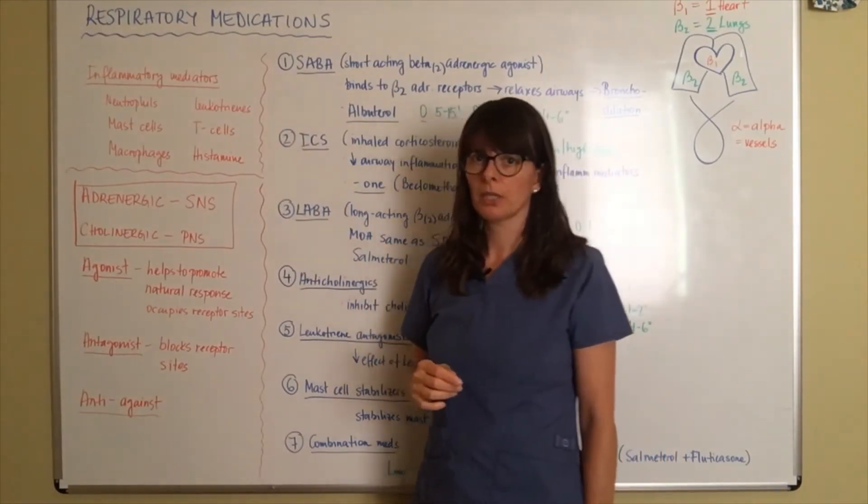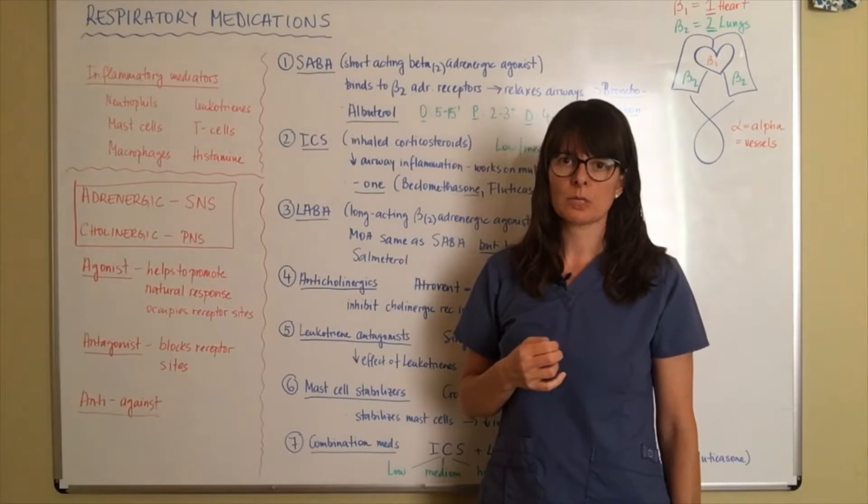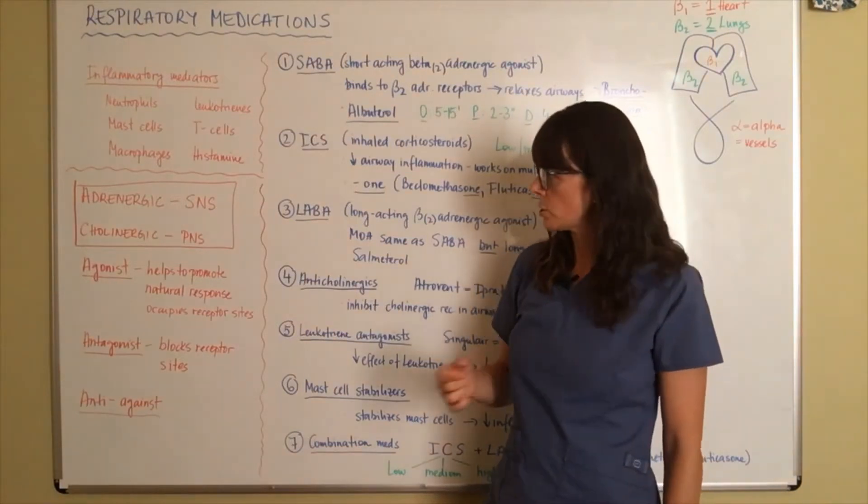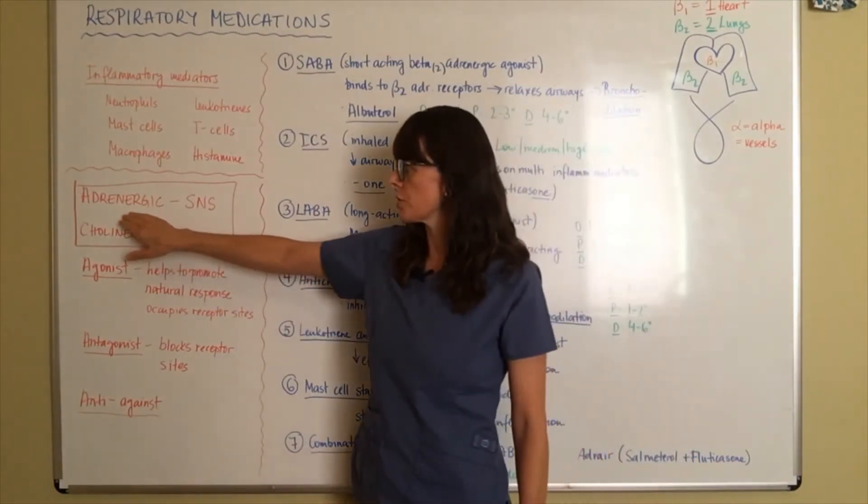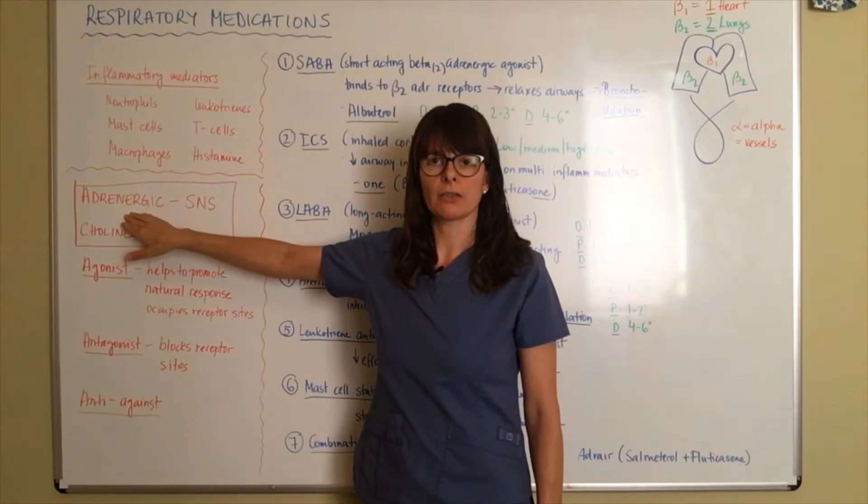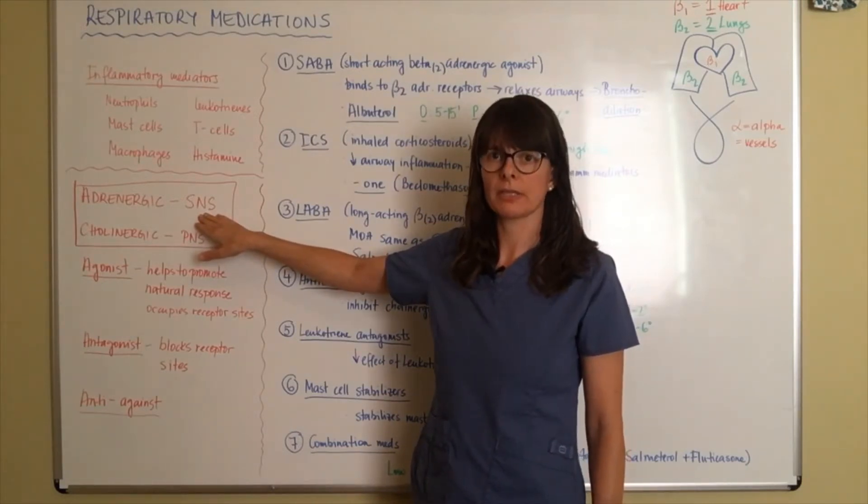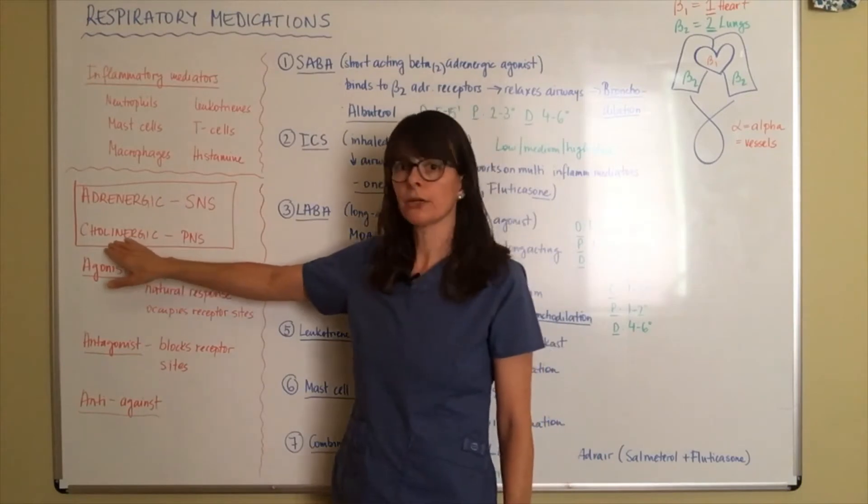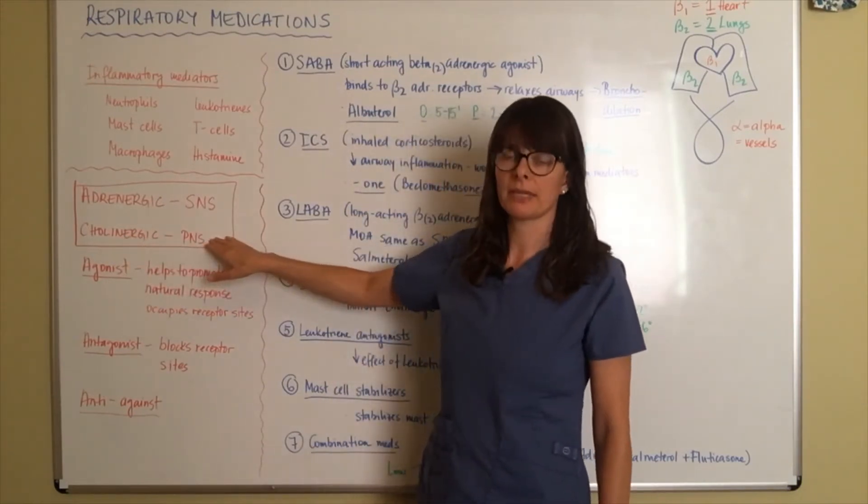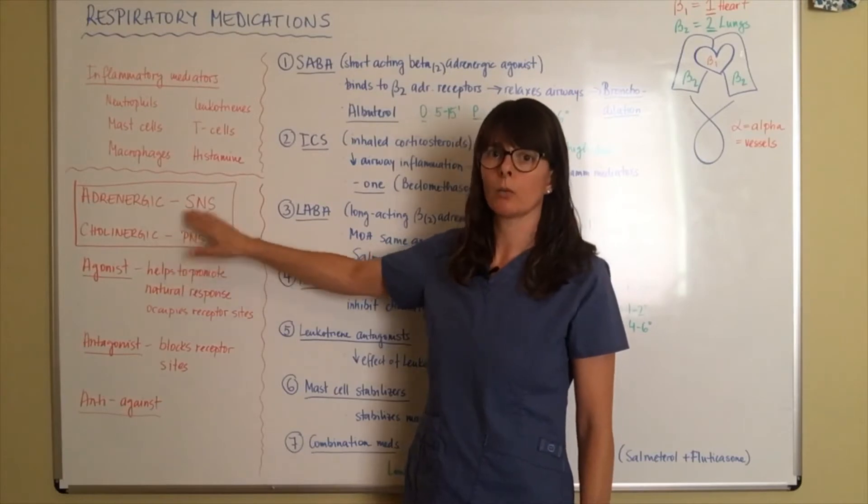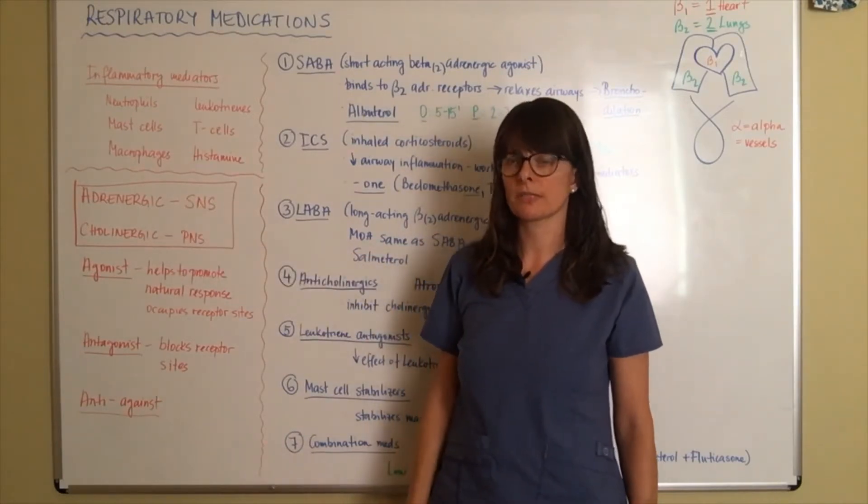And then other principles here—and this not only pertains to respiratory medications, this pertains to cardiac medications as well. Whenever you see the word adrenergic, think adrenaline. Think sympathetic nervous system and fight or flight response. So adrenaline, adrenergic response, sympathetic nervous system, where cholinergic pertains to the parasympathetic nervous system. So whenever you see these terms adrenergic or cholinergic, you know that they are working either on the sympathetic or parasympathetic nervous system.